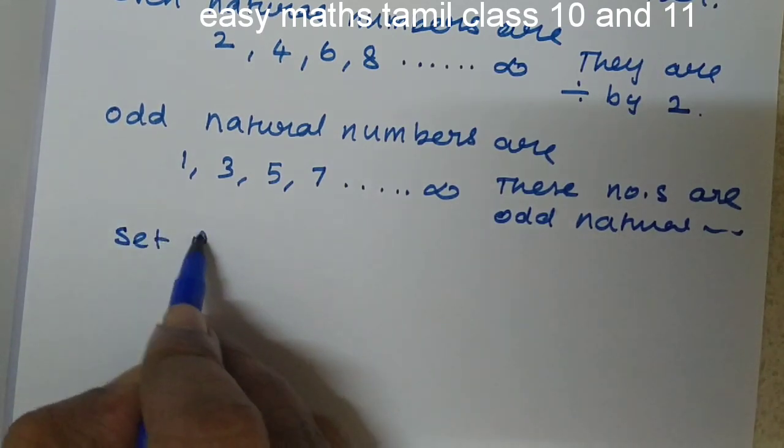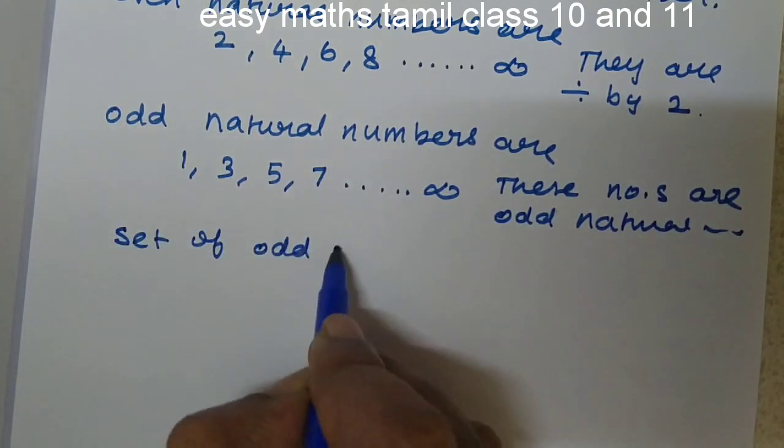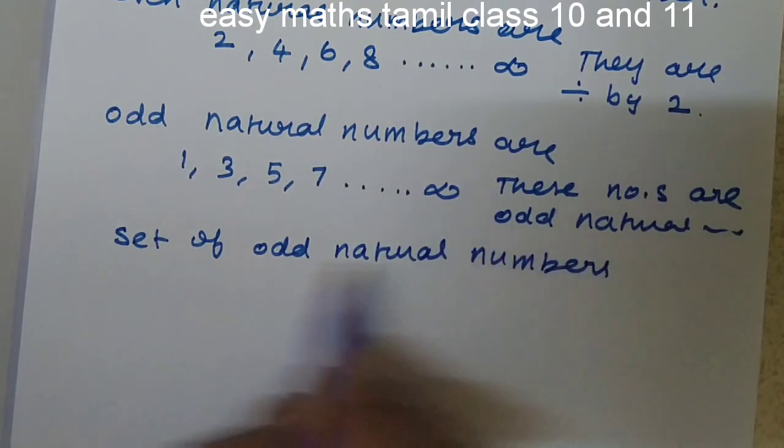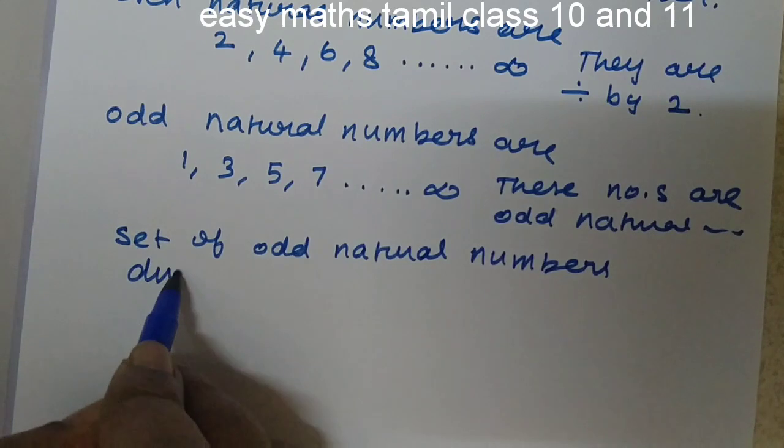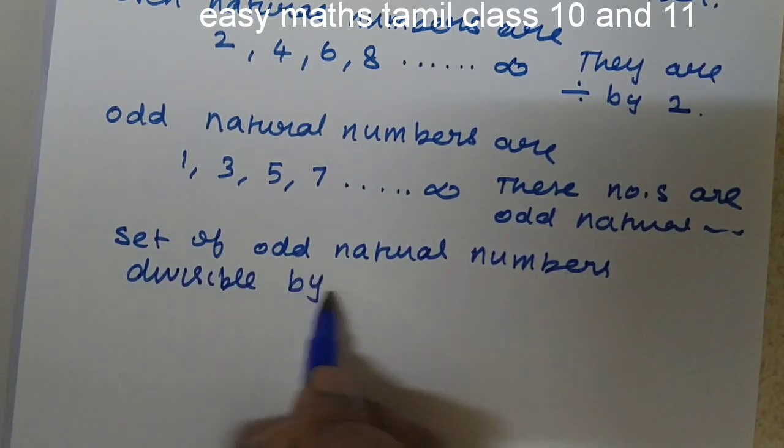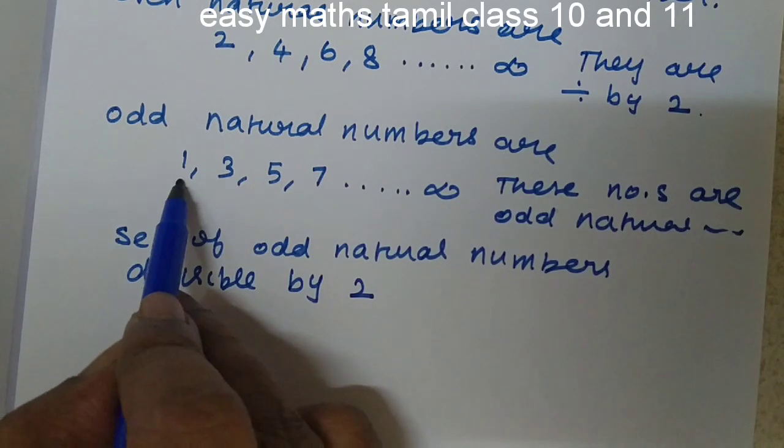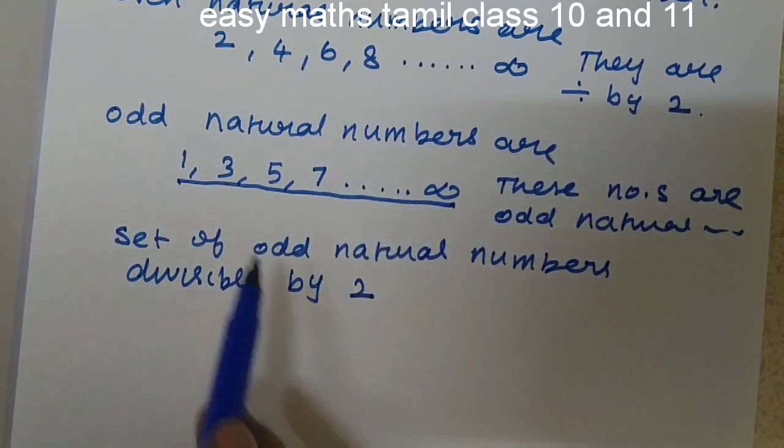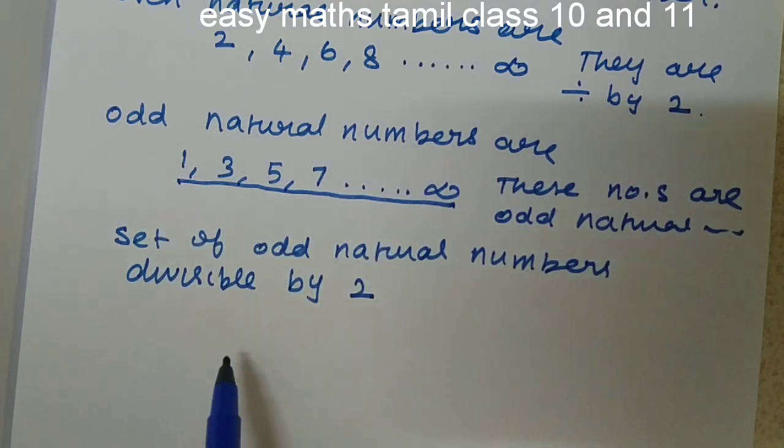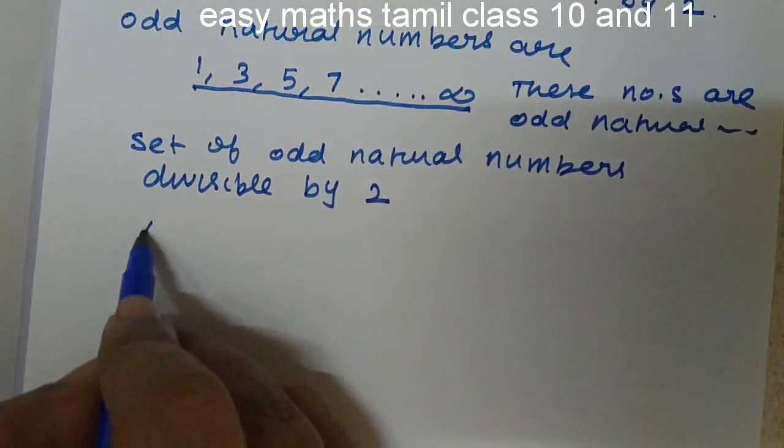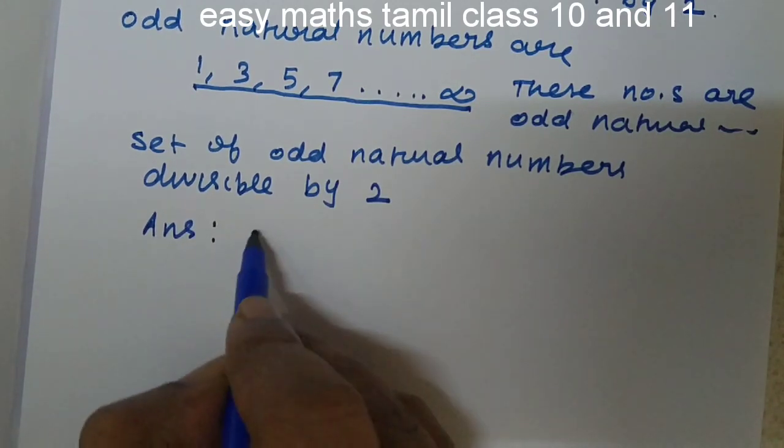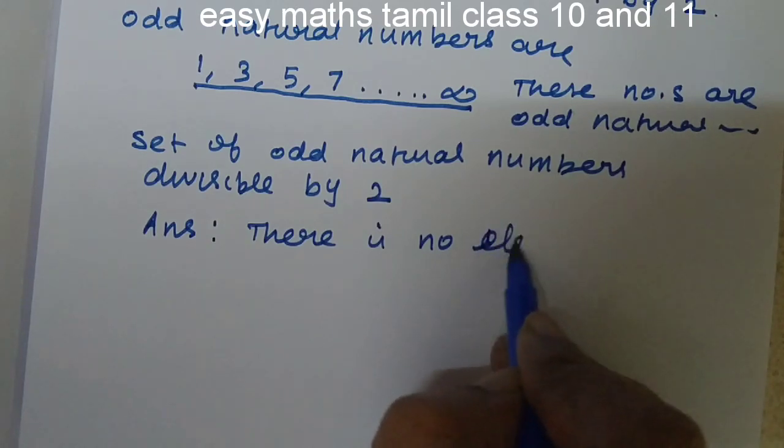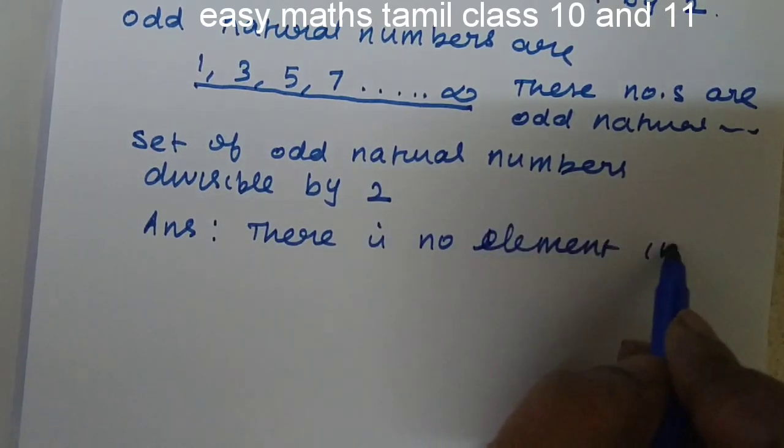The set of odd natural numbers divisible by 2. These are the odd natural numbers. Are they divisible by 2? We can't divide these numbers by 2. So the answer is, there is no element in this set.